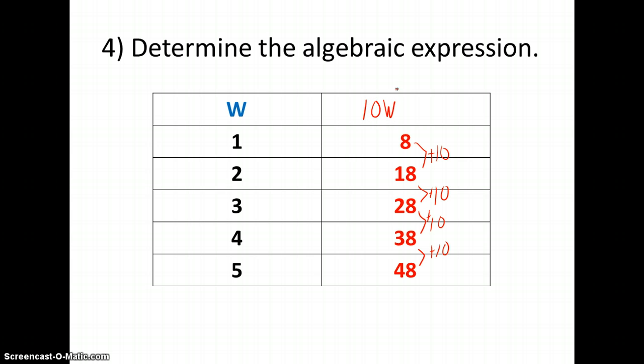But if I look at this, 10 times 1 doesn't equal 8. 10 times 1 is 10. What do I need to do to 10 to get to 8? I need to subtract 2, because 10 times 1 is 10, minus 2 is 8. Let's try it with the second one. 10 times 2 is 20, minus 2 is 18.